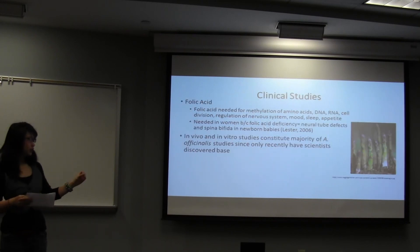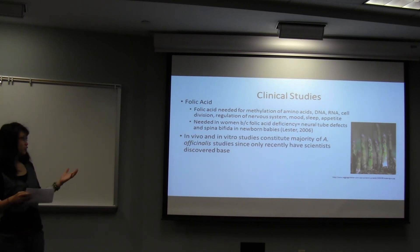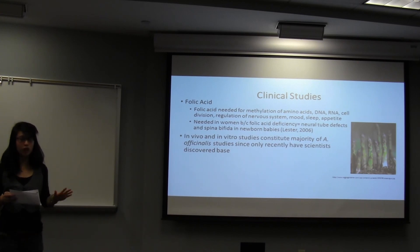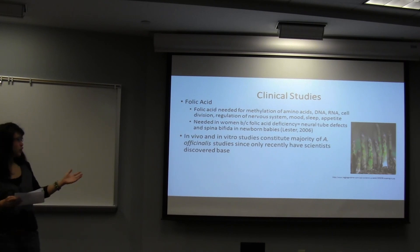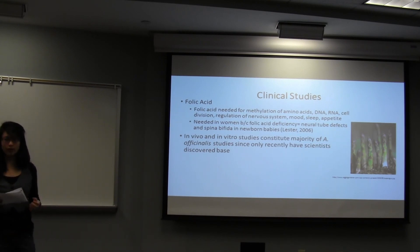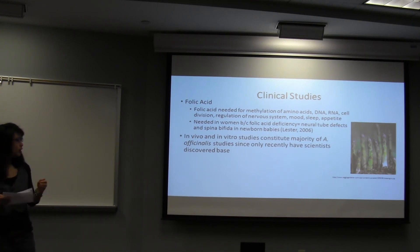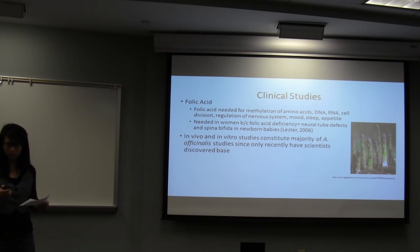There are very few clinical studies because researchers have just begun to realize that most activity is actually in the base, and right now they're still doing in vitro and in vivo studies. What is known, however, is that asparagus is very high in folic acid, which is needed for amino acid synthesis, DNA, RNA, cell division, regulation of the nervous system, sleep, and appetite. This is especially important because women who are pregnant should be eating lots of folic acid so their babies won't have neural tube defects or spina bifida. Most doctors actually tell women to eat a lot of folic acid when pregnant, and asparagus is one of the foods they can eat.